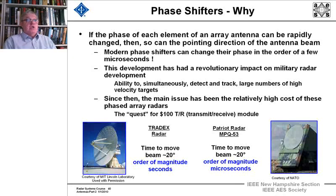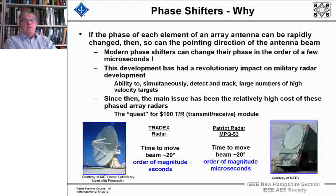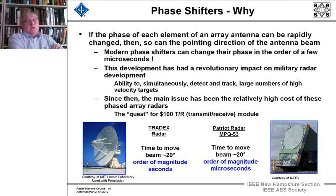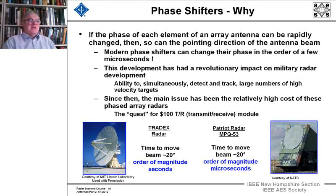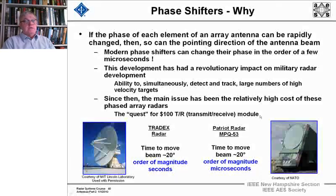Modern phase shifters can change their phase on the order of microseconds. This development has really revolutionized, in the last score of years, military radar development — the ability to simultaneously detect and track large numbers of high-velocity targets over a very large solid angle. Since then, the main issue has been cost. The quest is for a $100 element — and I mean not just the element but the stuff that holds the element, the power supply, the whole nine yards. Getting the cost down is a prime driver for those who work in this technology area.